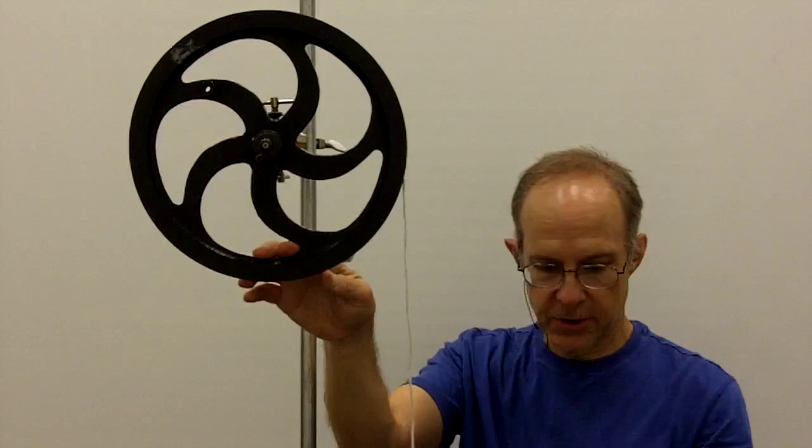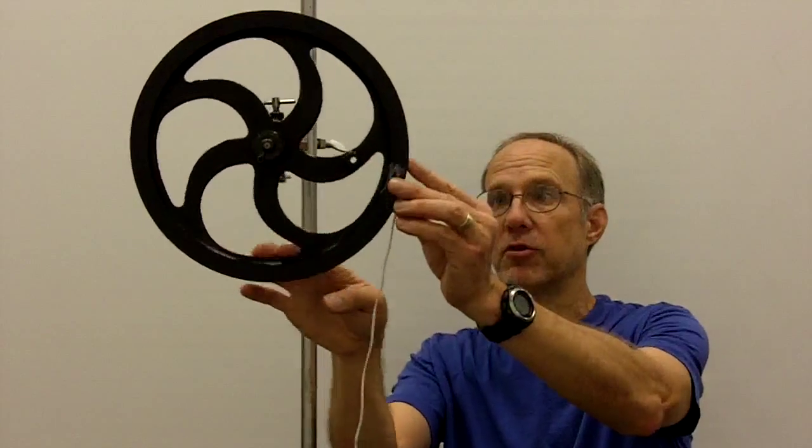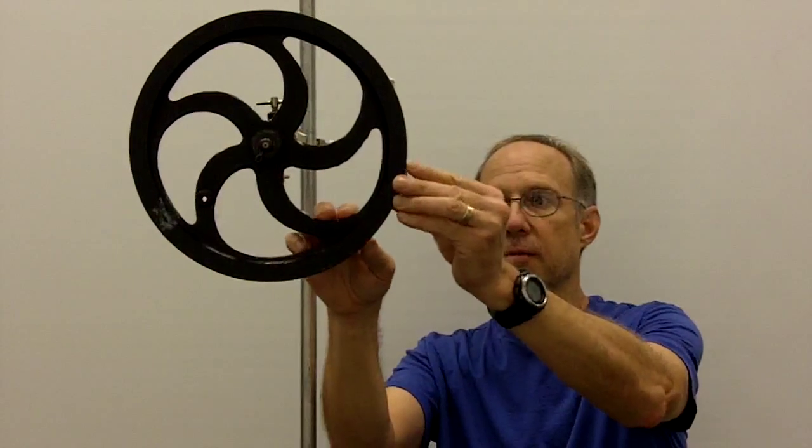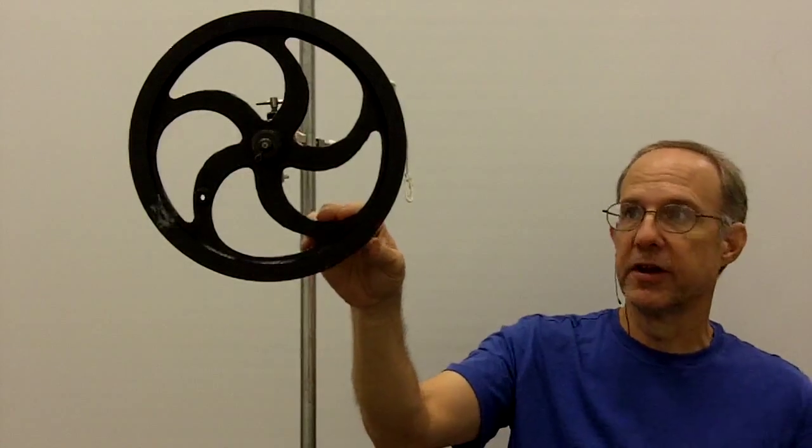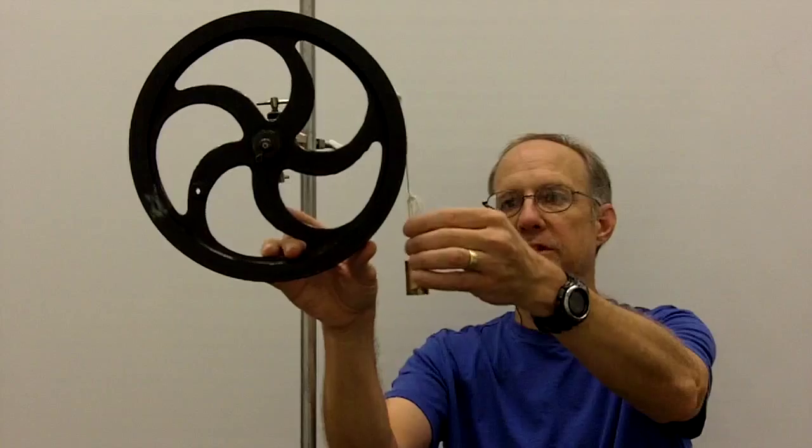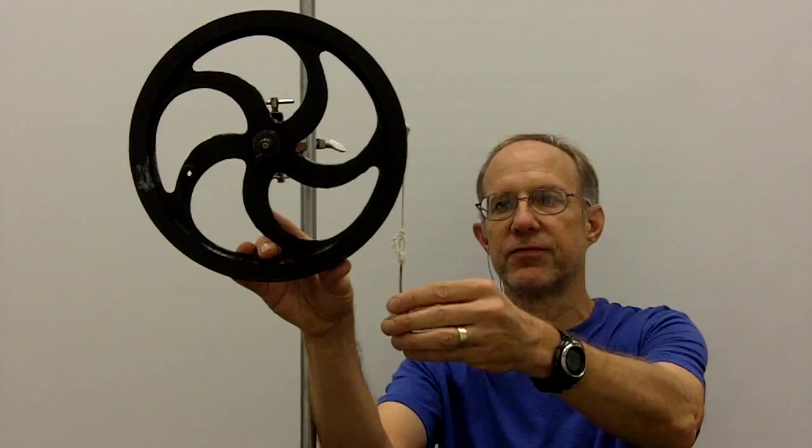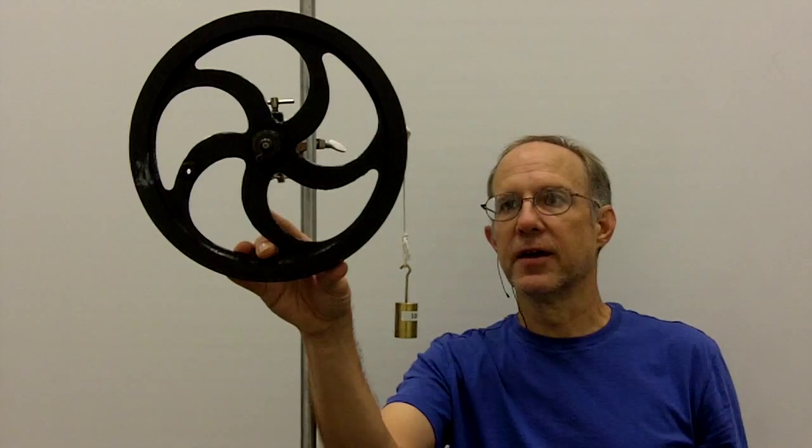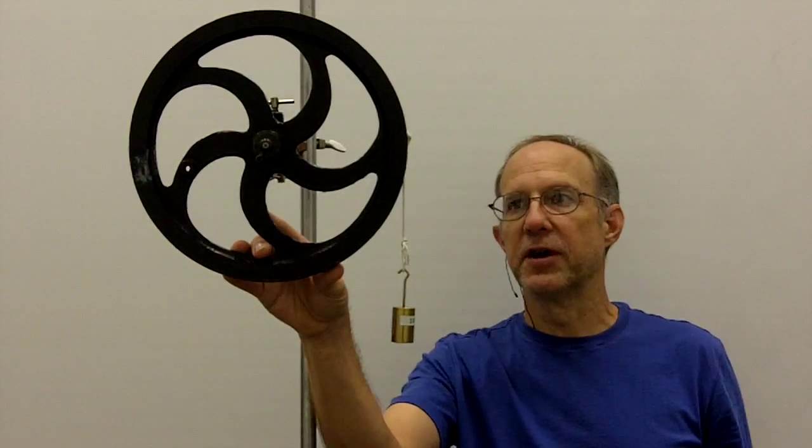We can increase that rate of rotational acceleration, of course, by simply increasing the mass, and we'll see that the rate at which this 100 gram mass falls will be fairly close to double, not quite what it would be for the 50 gram mass.